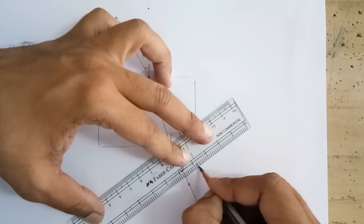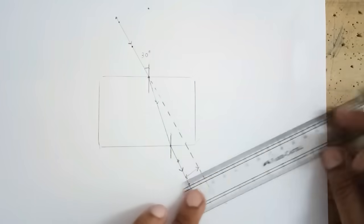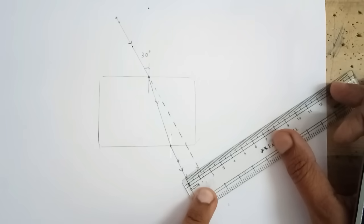Now this distance is called the lateral shift. Let me measure the lateral shift. The lateral shift is 1.3 centimeters.